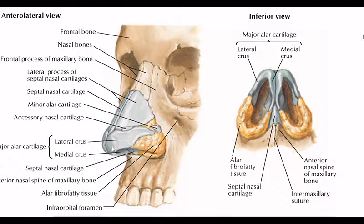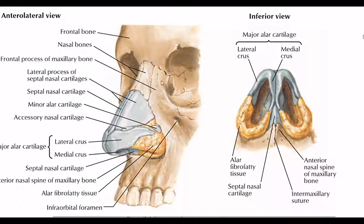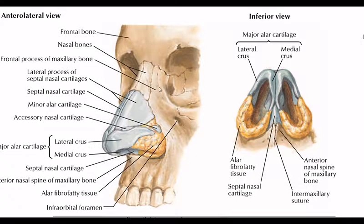The nose receives three types of nerves. External nasal nerve comes from the outer region. In addition, there are the infraorbital nerves. The internal nasal nerve comes from the interior. There is also a nerve called the nasociliary nerve.